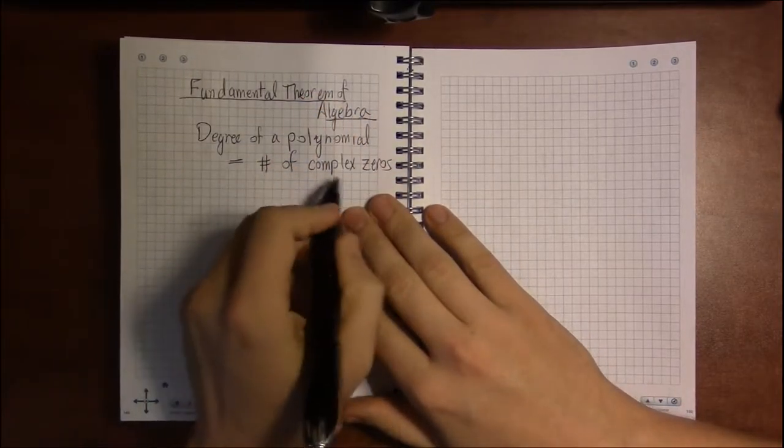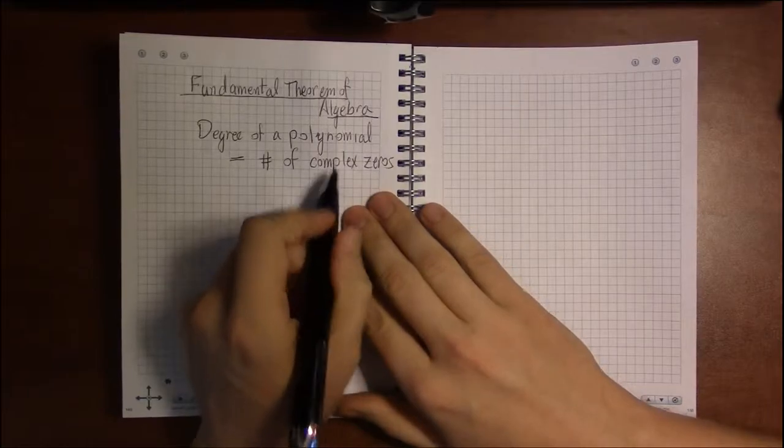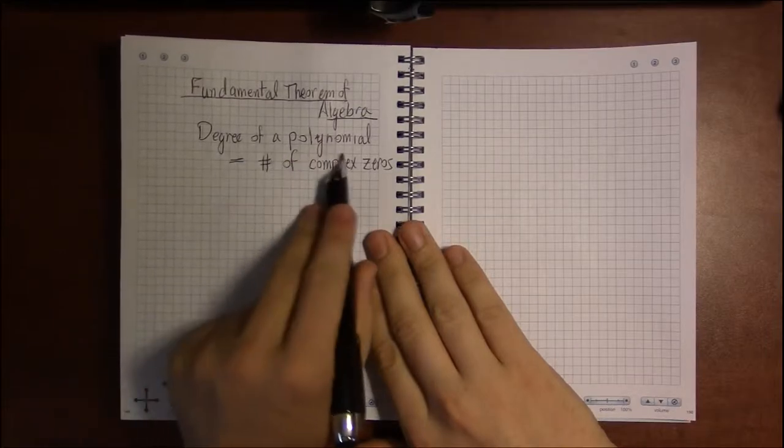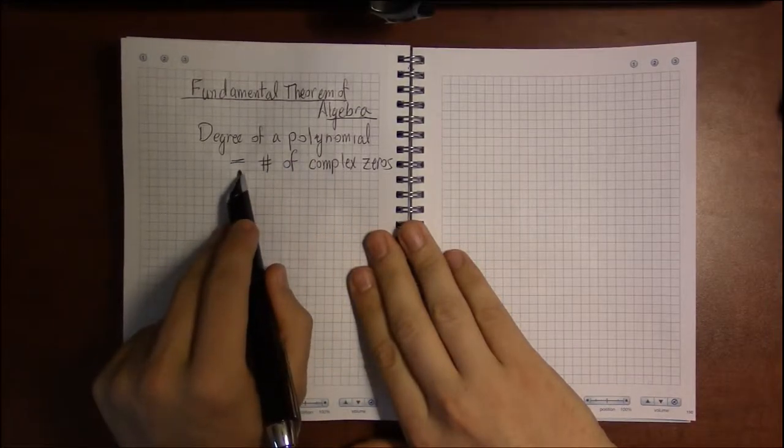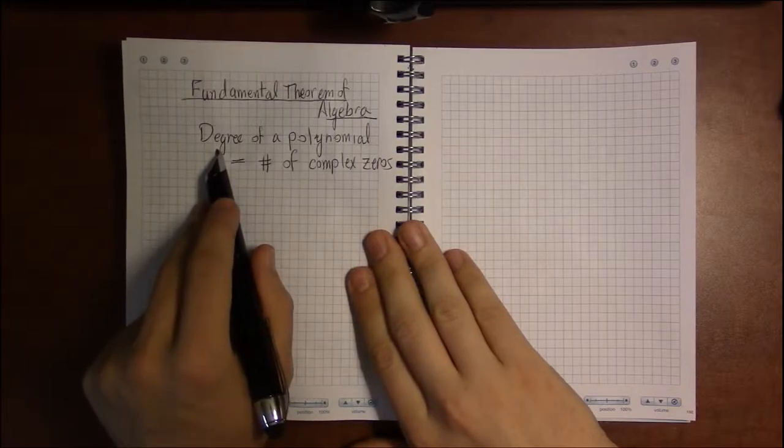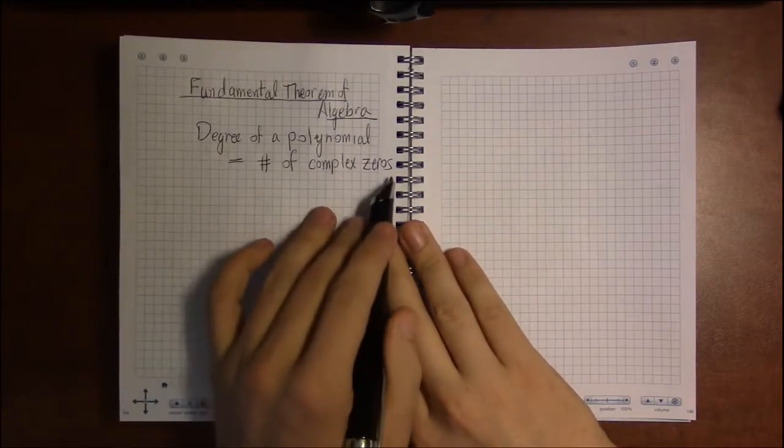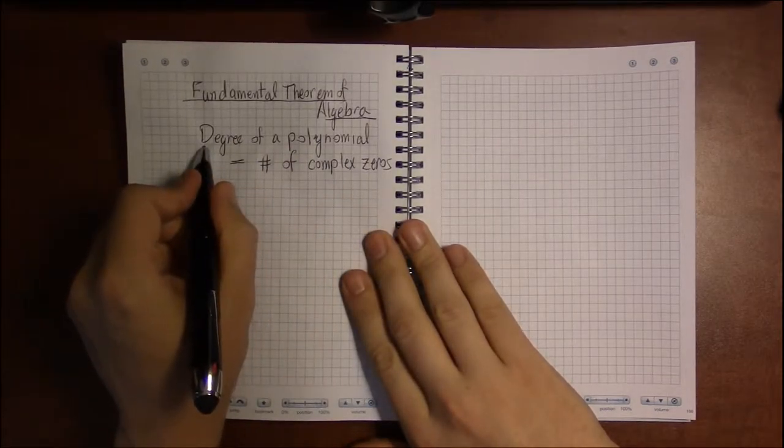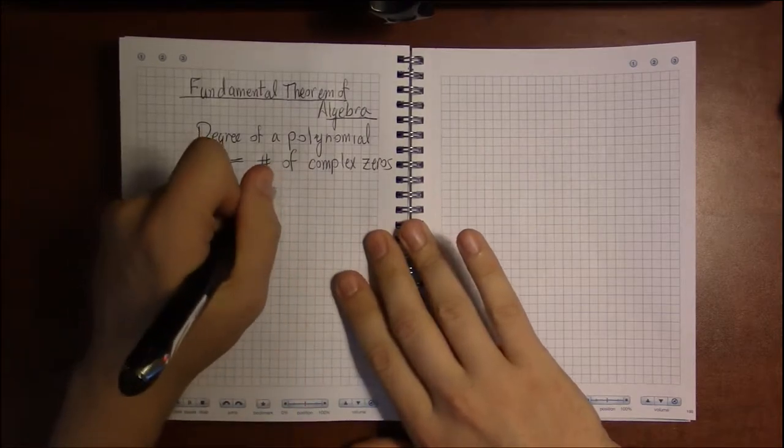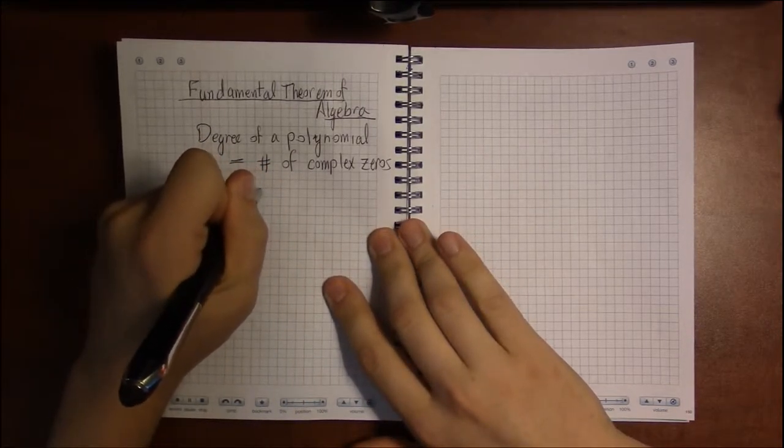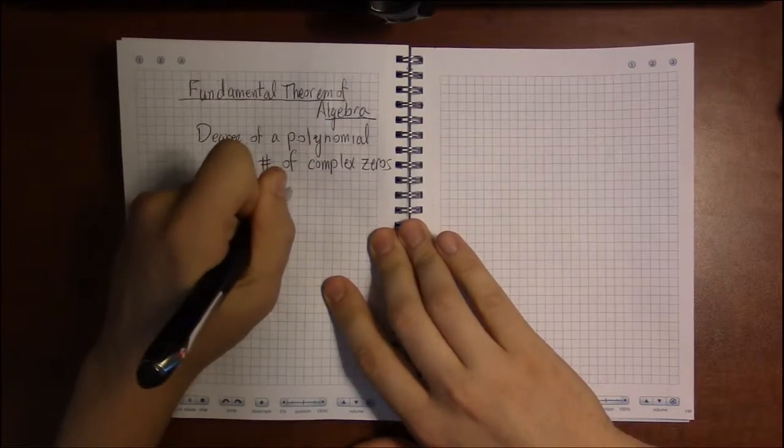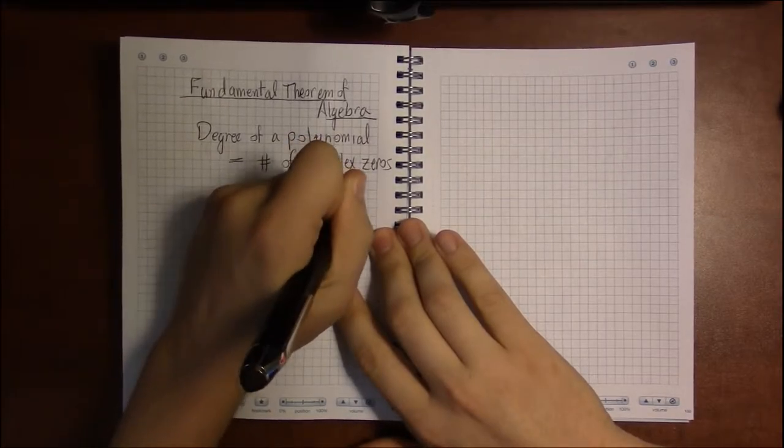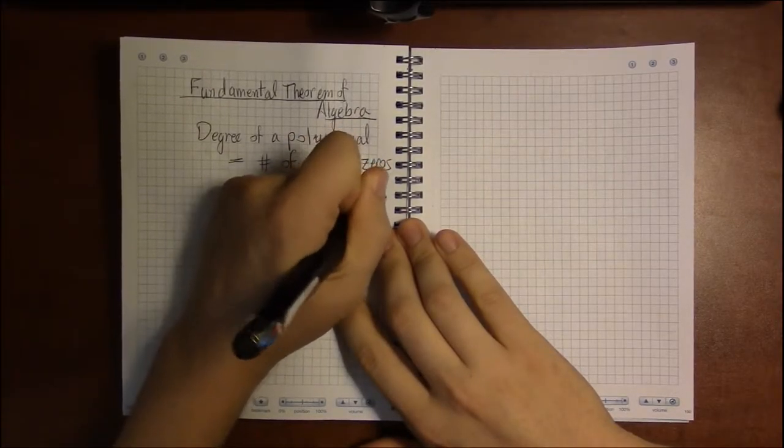The degree of the polynomial is equal to the number of complex zeros. So not just zeros, but zeros which can be complex numbers. If you expect the zeros to be real, you won't always get true equality. The degree may sometimes be larger. But if you allow yourself zeros which are complex numbers, you will get exactly the degree of the polynomial. But the only caveat here is that you have to take into account multiplicities.